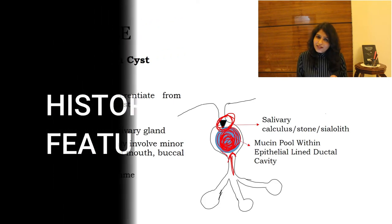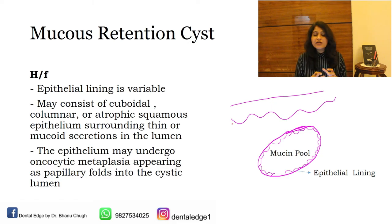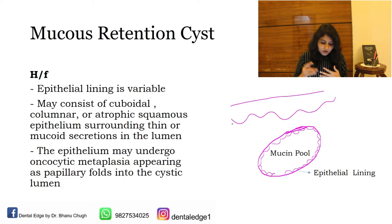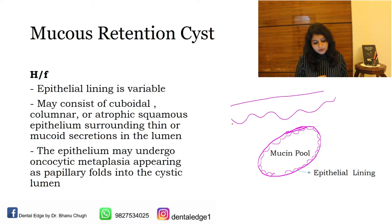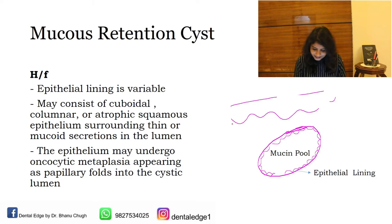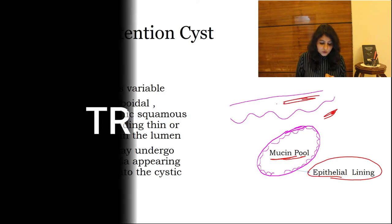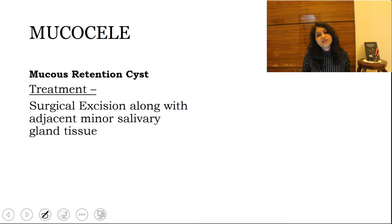Histopathological features of a mucus retention cyst: there will be a pathological cavity filled with mucin surrounded by ductal epithelium. This ductal epithelium can be cuboidal, columnar, or atrophic squamous epithelium. Sometimes the epithelium may undergo oncocytic metaplasia, appearing as papillary folds into the cystic lumen. As seen in this image, the mucin pool within the connective tissue is surrounded by an epithelial lining. Treatment is surgical excision along with the adjacent minor salivary gland tissue.